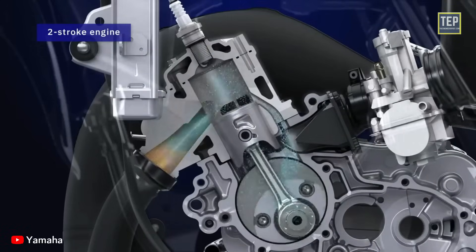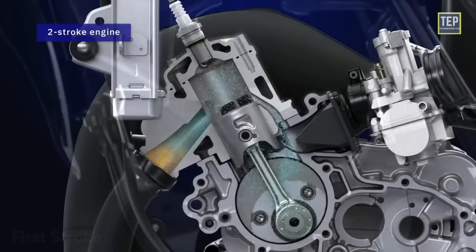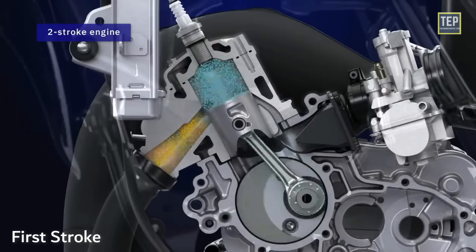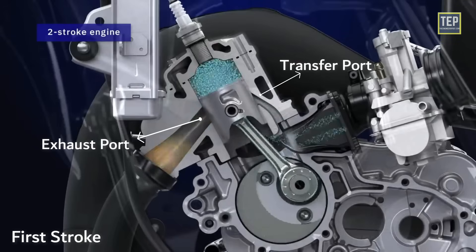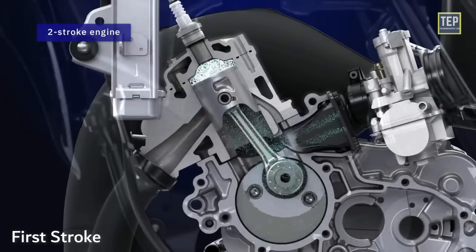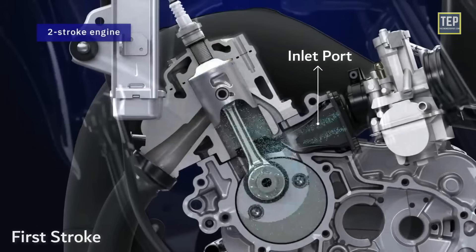Working of a two-stroke petrol engine: the two-stroke engine requires one revolution of the crankshaft, or two strokes of the piston, to complete the cycle. It also works on the principle of the Otto cycle. In the first stroke, the piston starts at bottom dead center and moves upward to top dead center, closing the transfer port and exhaust port. The air-petrol mixture already in the cylinder is compressed. Simultaneously, a partial vacuum is created in the crankcase and a fresh charge is drawn in through the uncovered inlet port.